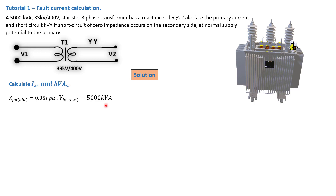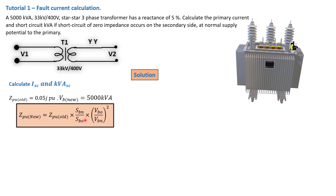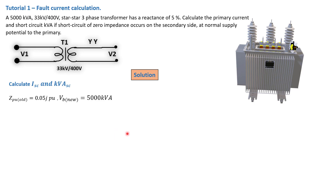I've done a lot of tutorials on per-unit — please check my channel for those. The general per-unit conversion formula is: Z_pu_new = Z_pu_old × (S_B_new / S_B_old) × (V_B_old / V_B_new)². This is the formula used to convert from an old base system to a new base system.